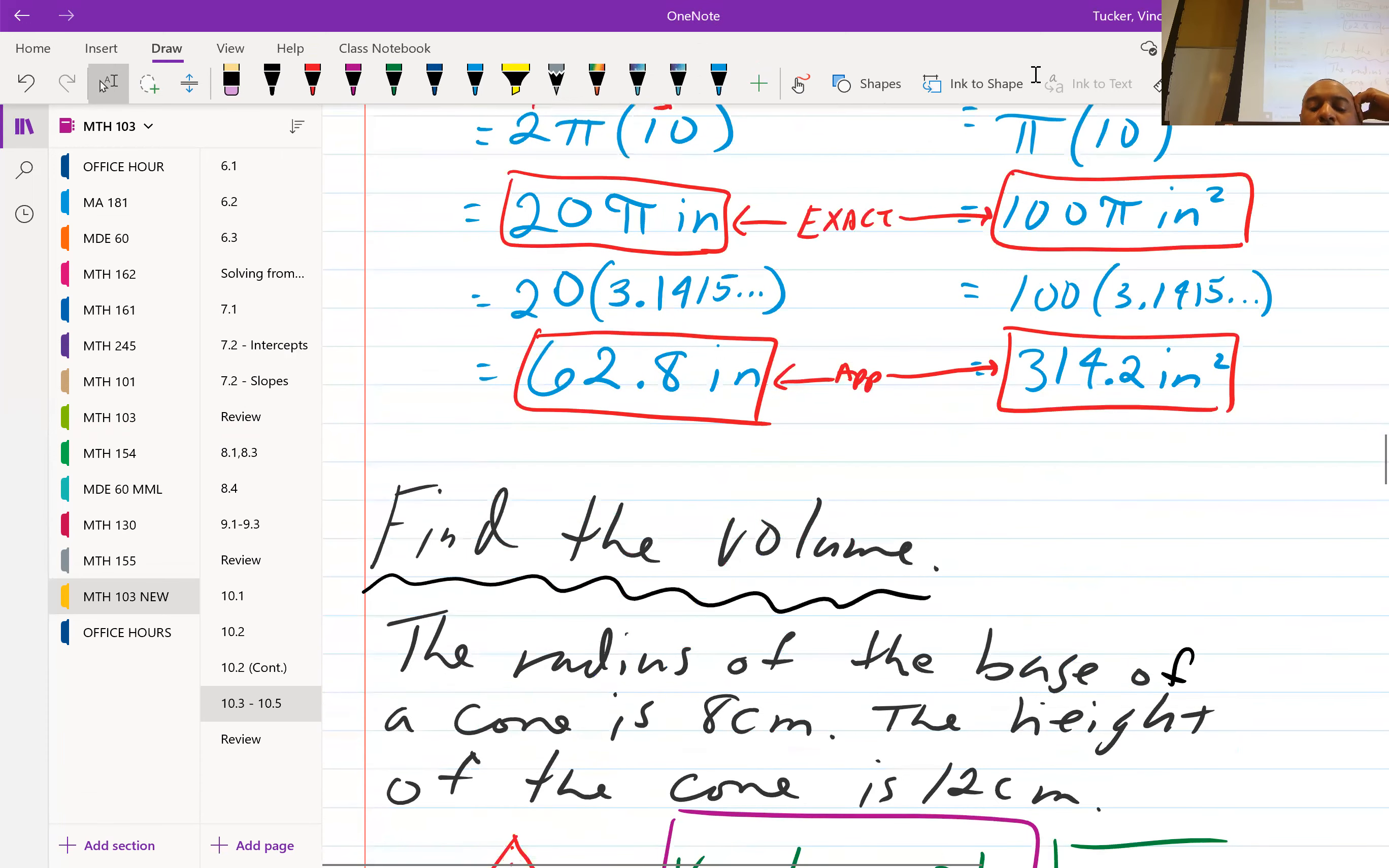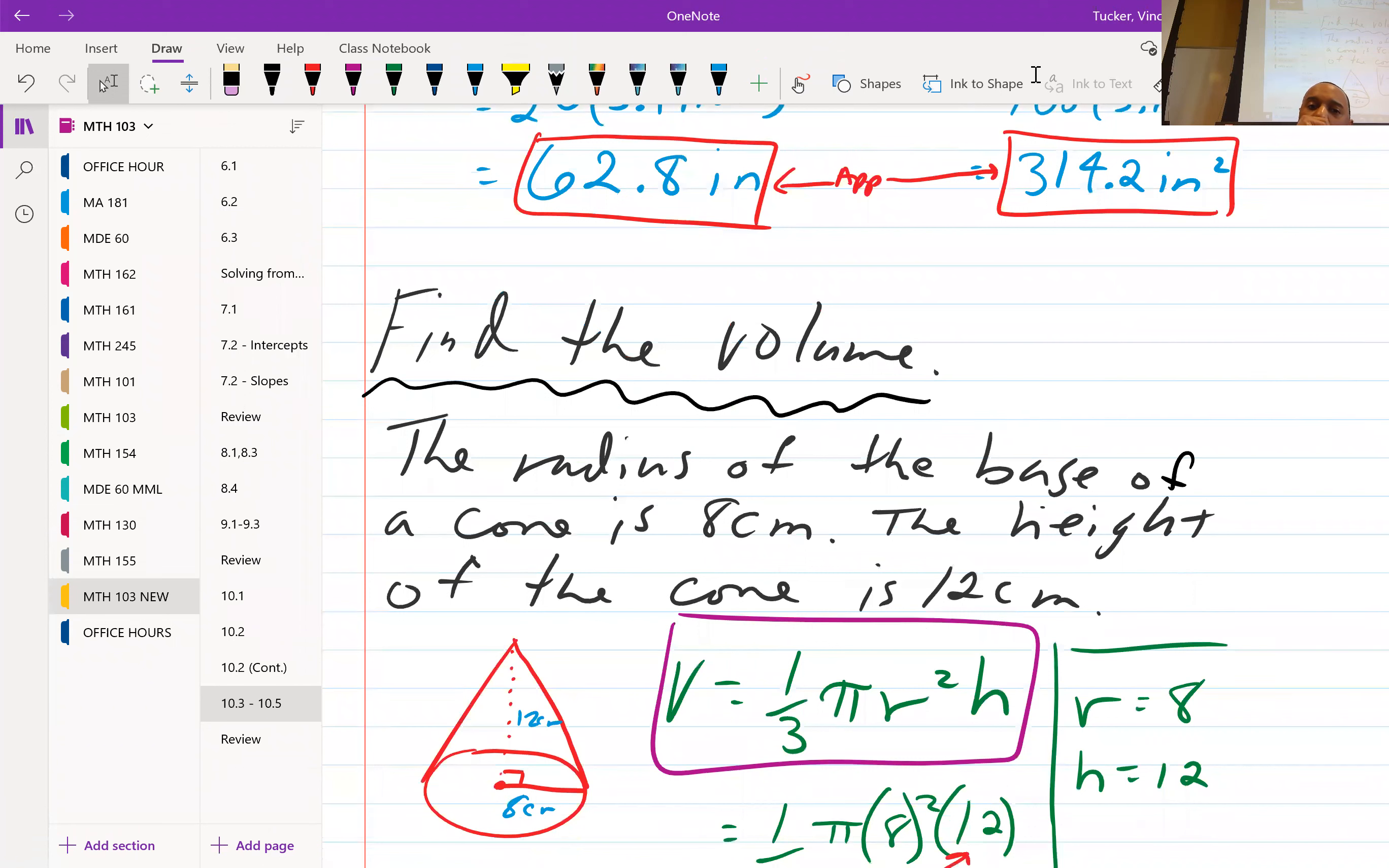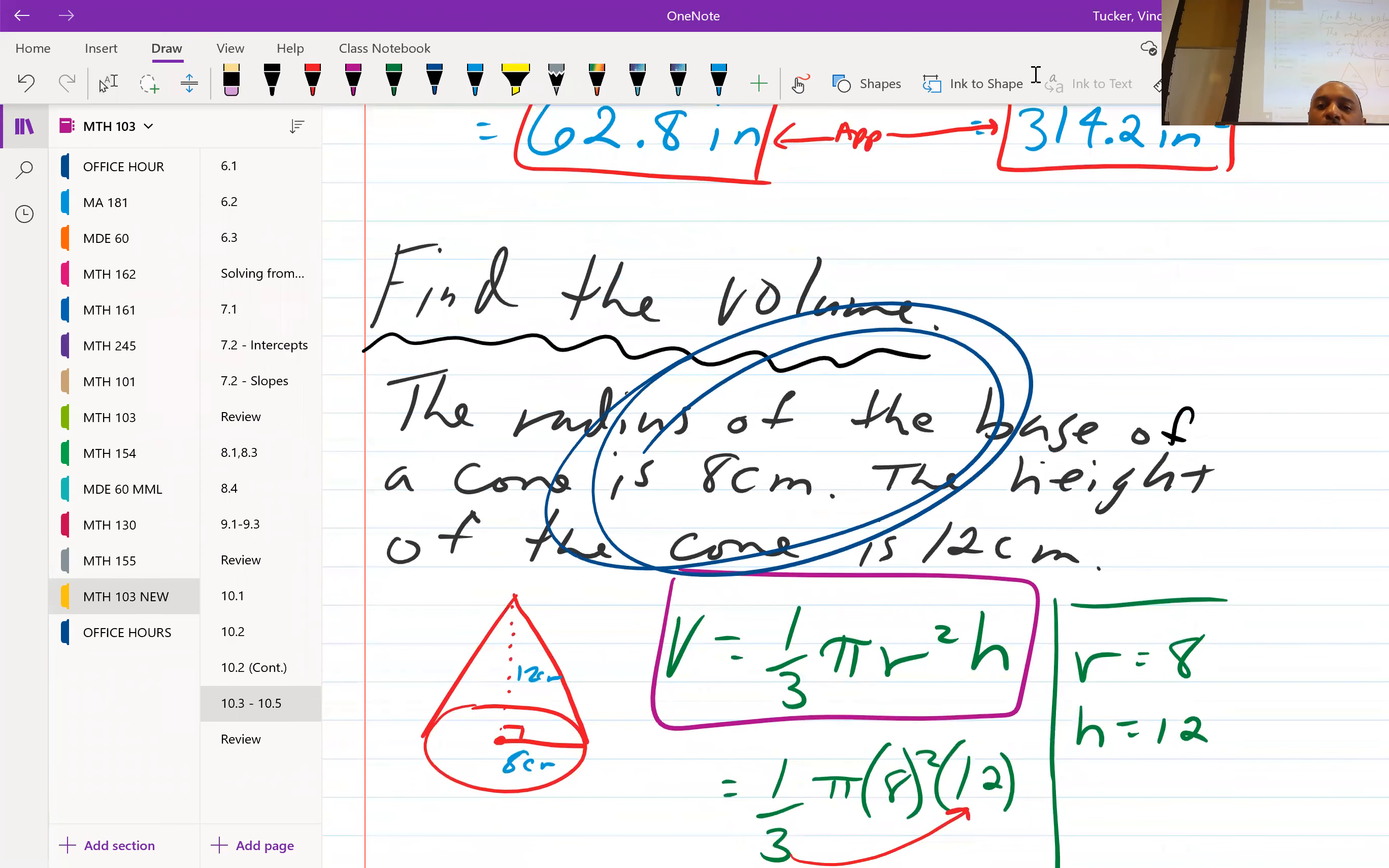All right let's look at volume. Volume has the same feel or same flow as area. They give you a shape, give you the dimensions of the shape and then from there you just need to use the proper formula in order to calculate the volume. So every shape has its own formula. So here the radius of the base of the cone is eight centimeters, the height of the cone is 12 centimeters.